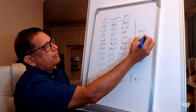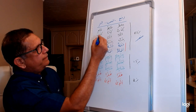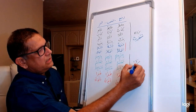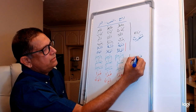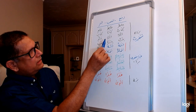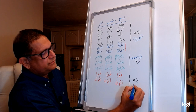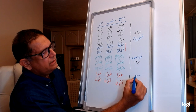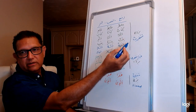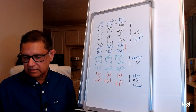The category in which all three changes occur is called Munsarif — three forms. The category where nasb and jar look the same is called Ghayru Munsarif — two forms. The category where nouns do not change at all is called Mabni. So: 85% are Munsarif, 15% are Ghayru Munsarif, and only 2% are Mabni — they do not change in any circumstances.